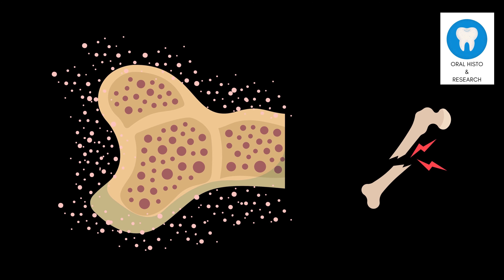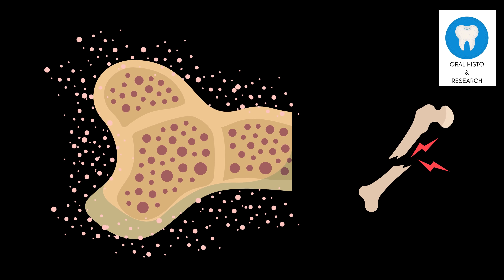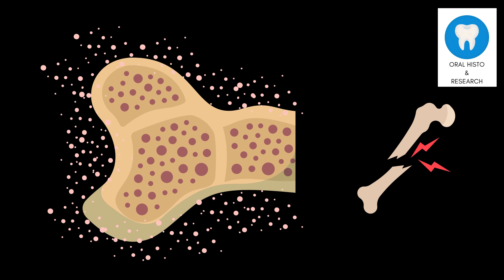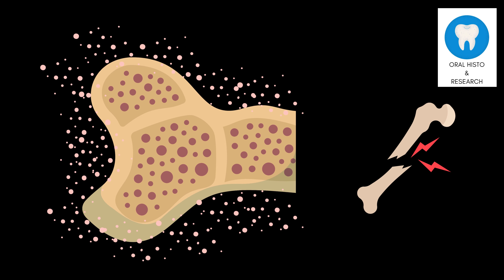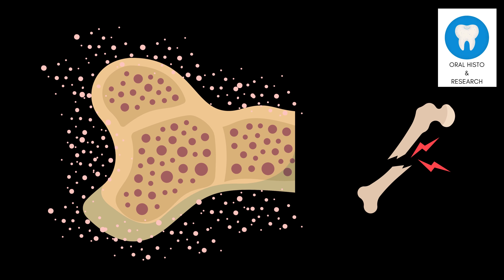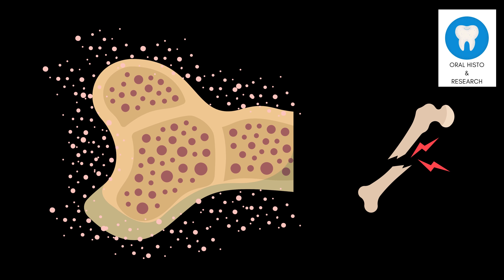As the disease starts, the body loses much more bone than it makes. As the disease progresses, new bone forms at a faster rate than the rate at which old bone is removed. However, the new bone does not form correctly, leading to larger, weaker, and softer bones.